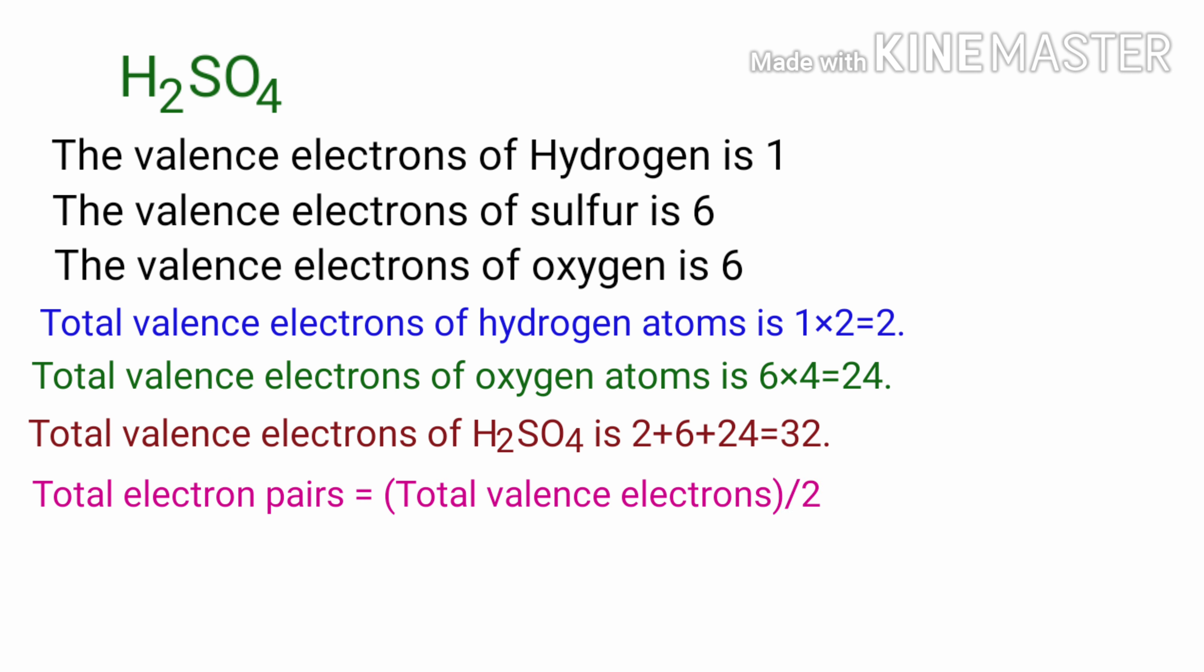Total electron pairs are determined by dividing the number total valence electrons by 2. For H2SO4 total pairs of electrons are 32 by 2, that is equal to 16.